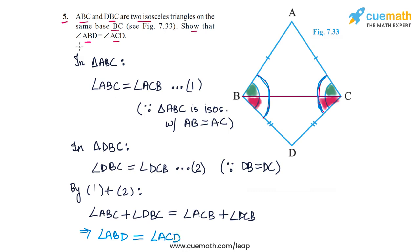So angle ABD is equal to angle ACD. That completes our proof because this is what we had to prove. And with that, question 5 is done.